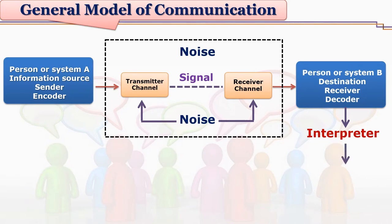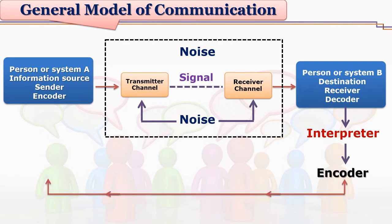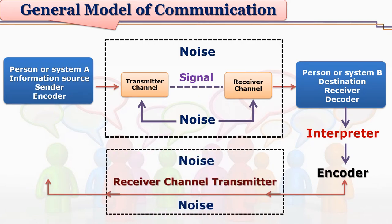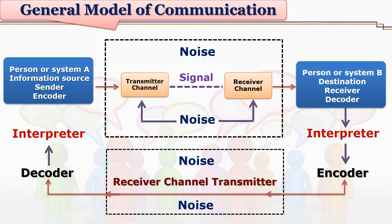The destination is the ultimate receiver of the message and needs to decode it, because the message arrives in a particular signal system. Changing this signal system is done by the receiver channel. Whenever we talk about so many channels, signals, and messages, some noise is bound to appear, so we have to take care of minimizing this noise, otherwise the entire nature of the message gets changed.